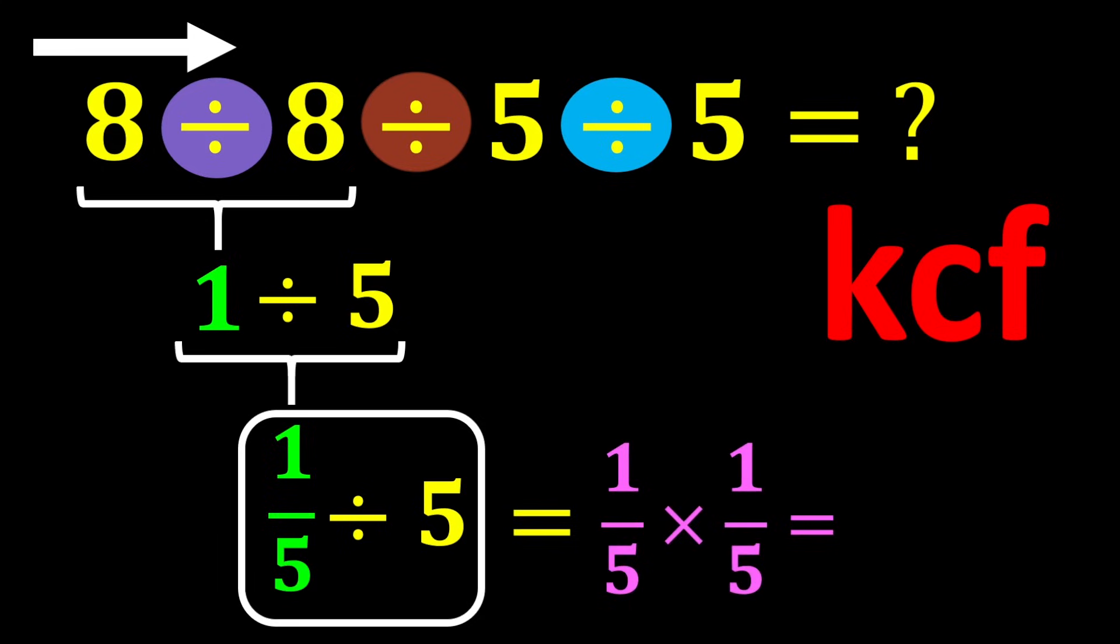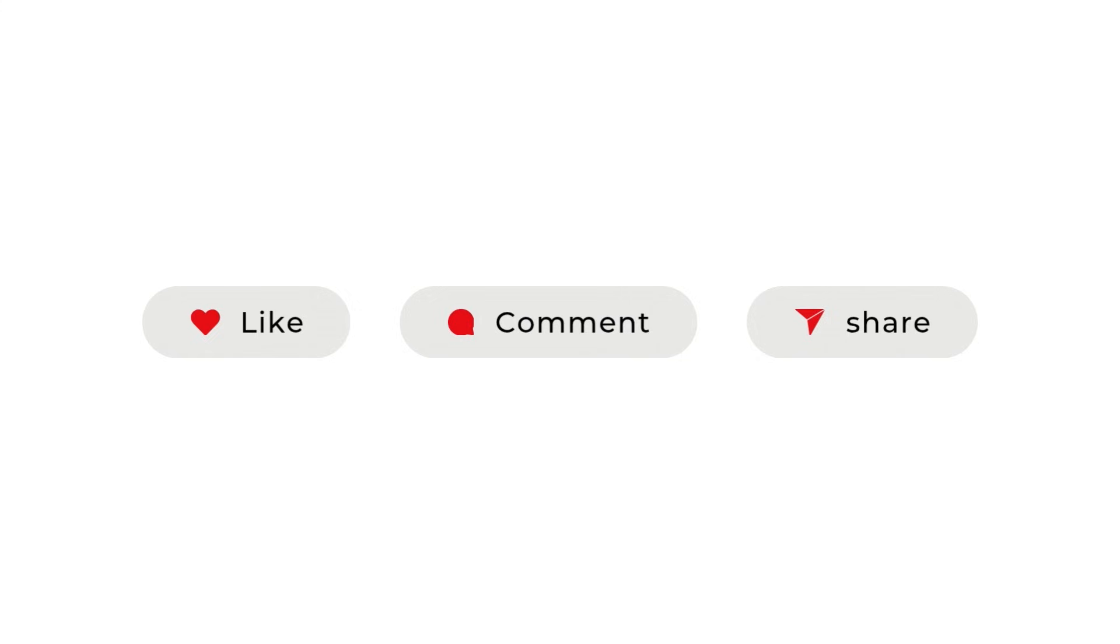One over five multiplied by one over five gives us one over twenty-five, which is our correct and final answer. Thank you for watching this video. If you enjoyed it, like the video.